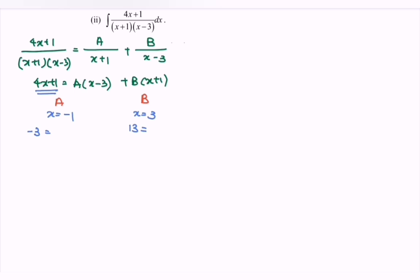So substitute the situation. If we substitute negative 1, then we will have negative 4A. So A will be equal to 3 over 4. Continue. If we substitute 3, then we will have 4B. So B will be equal to 13 over 4.